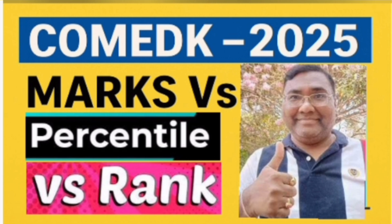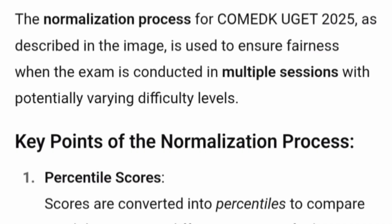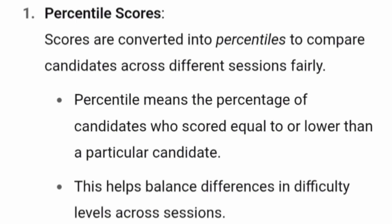Let's first understand the overall normalization process itself. The normalization process is basically when they are comparing the toughness level or the difficulty levels of different sessions or multiple sessions. In this case, three sessions of COMEDK were there. Based on the normalization process, what they define is called the percentile score. So scores are converted into percentile — whatever marks you get in the COMEDK paper, those are converted into percentile to compare candidates across different sessions.